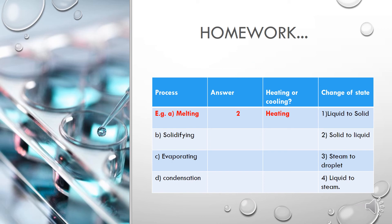Your homework would be to tell us which process it is — melting, solidifying, etc. — which states are changing, and whether you're heating it or cooling it. Here's an example for the first one: the process is melting. You're putting an ice cube in the sun — you're adding heat and heating the ice cube. It turns from solid to liquid. So the answer is solid to liquid, number two.